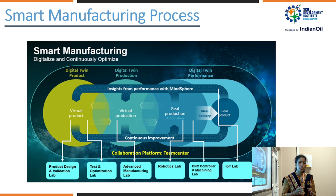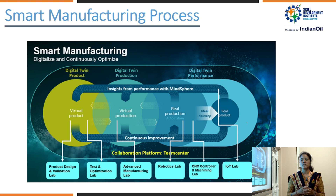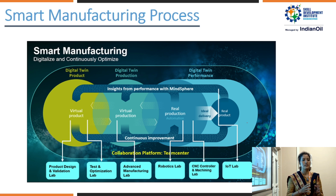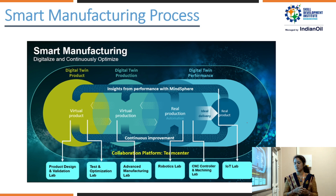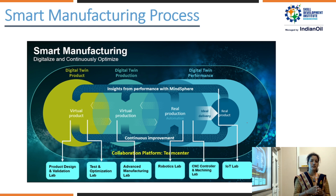Next, it goes to the advanced manufacturing lab, which outputs to the CNC where the design is cut and shaped. We also have a robotics lab under Siemens, and there is collaboration between the robotics and CNC controller and machining lab. Last is the IoT lab.